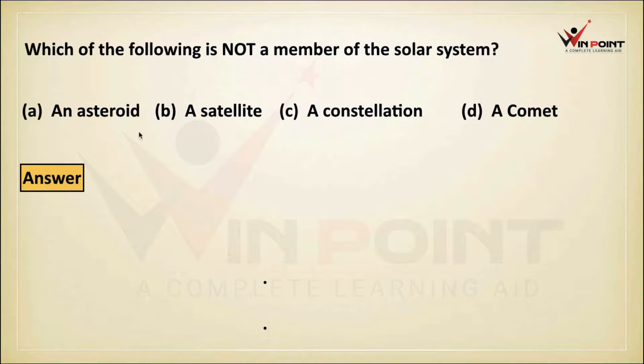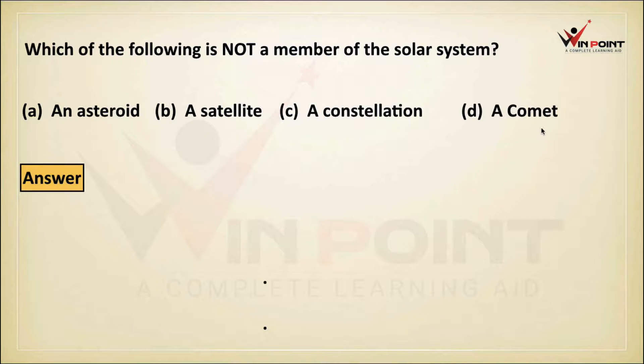Which of the following is not a member of the solar system? Asteroid, a satellite, a constellation, a comet.